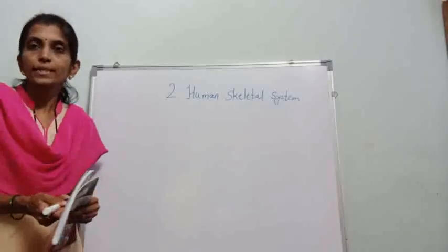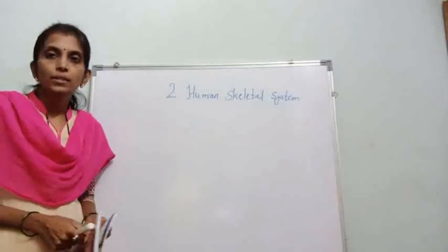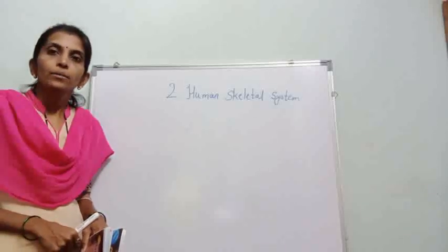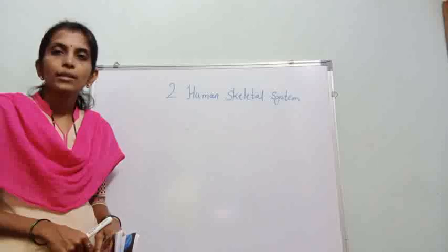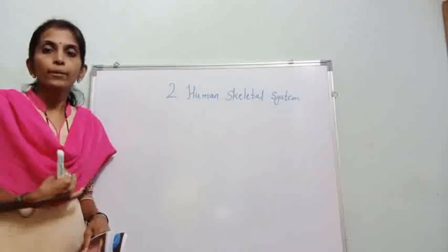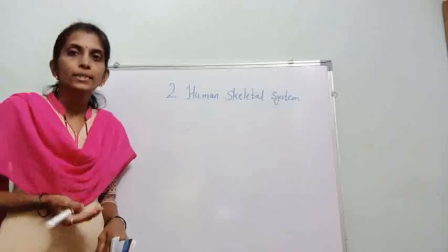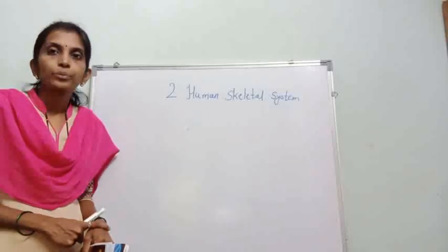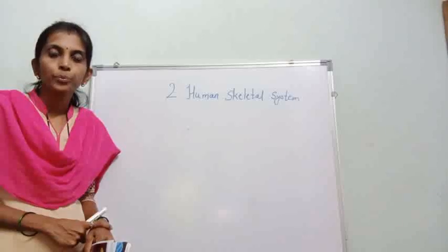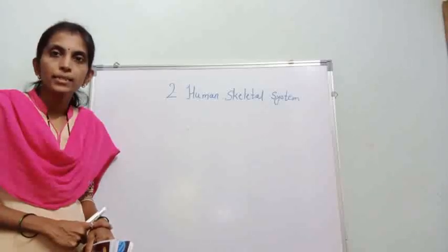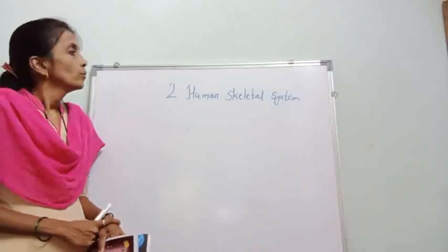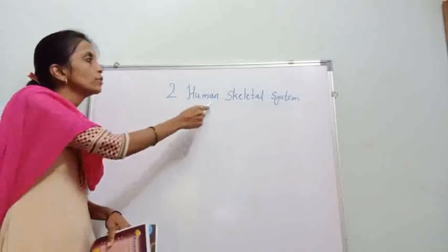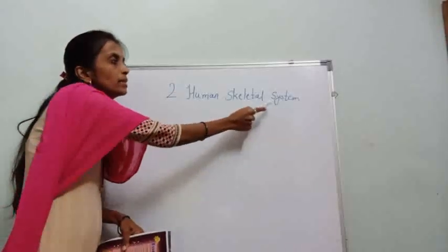You know, in the first lesson we studied the circulatory system. In that lesson, we also noted that in our bodies there are a number of systems: circulatory system, skeletal system, nervous system, respiratory system. So one system we are studying in this lesson is the human skeletal system.